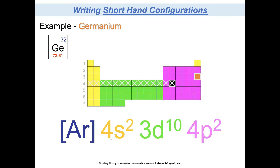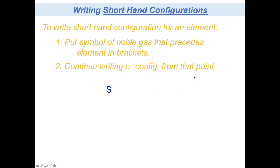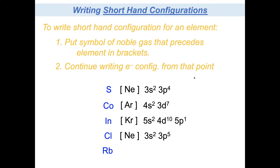That is how you handle shorthand configurations. We will ask you to do these a lot because it's much quicker. You'll get so used to writing 1s2, 2s2, 2p6 that it's nice to shorthand it with the noble gas in brackets. It has to be the noble gas that comes before the element. For rubidium, for example, you'd use krypton in brackets and then rubidium is the first one in the 5s group: [Kr] 5s1. Nice, short, and simple.